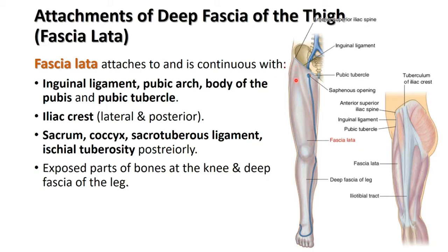Going to the attachments of fascia lata: superiorly it is attached to the inguinal ligament. Anteriorly it is attached over the pubic arch, pubic tubercle, and body of the pubis. Laterally it is attached over the iliac crest. Posteriorly it is attached over the sacrum, coccyx, sacrotuberous ligament, and ischial tuberosity.